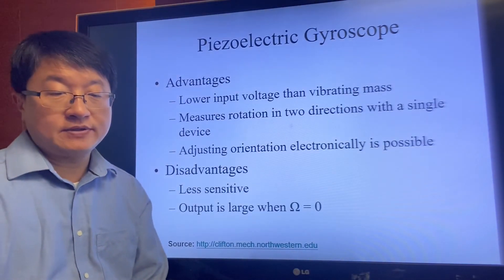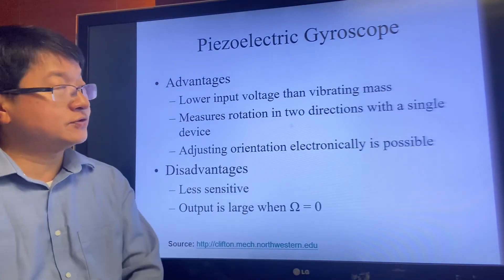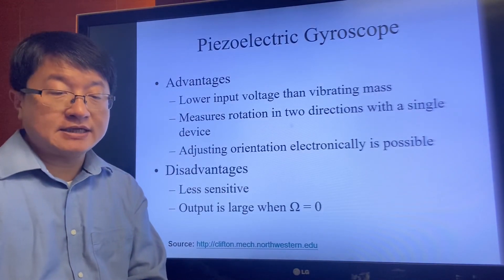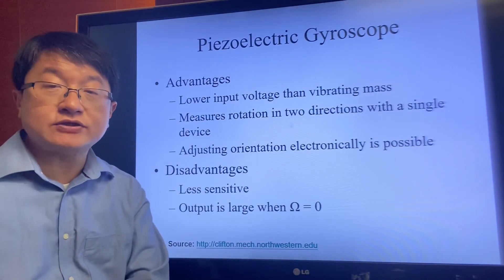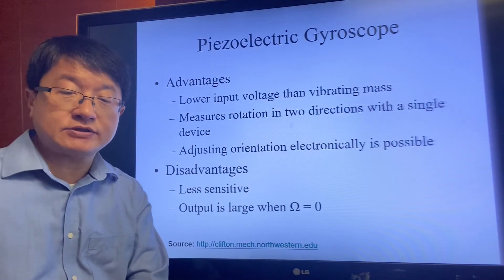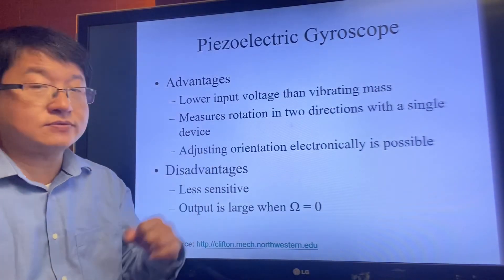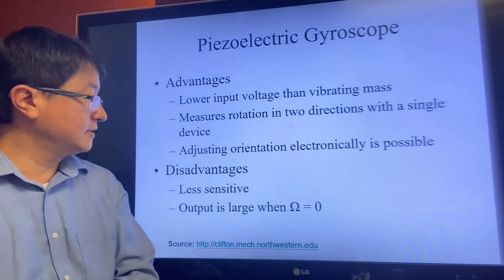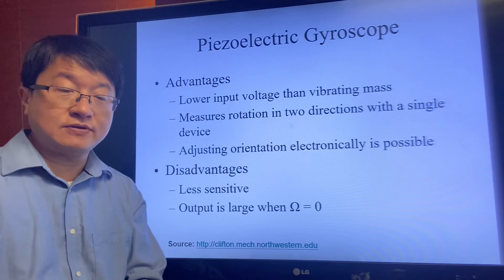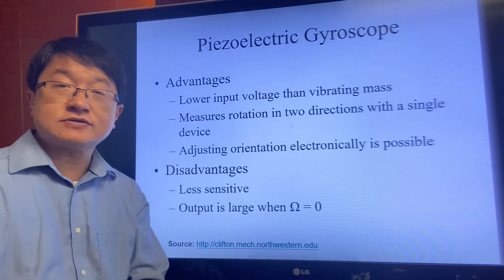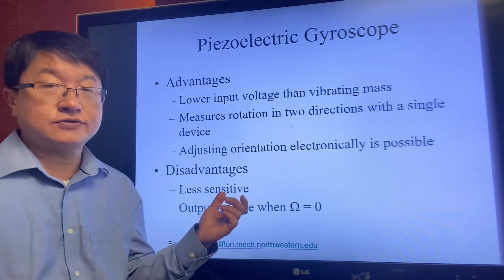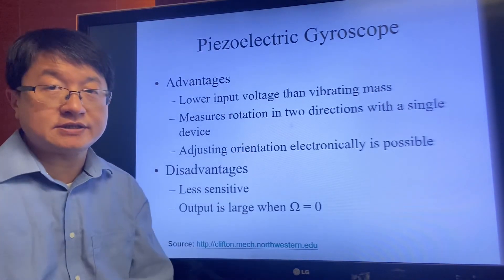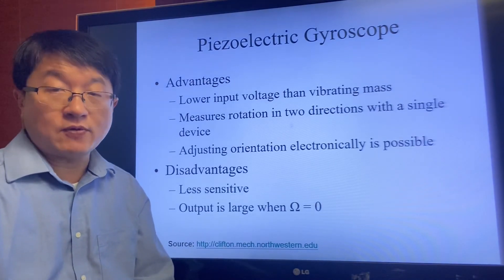There are advantages and disadvantages of using a piezoelectric gyroscope. For example, it can operate at a lower input voltage with a vibrating mass, and can measure rotations in two directions using a single device. However, the sensitivity is not that good, and the output is large when the resistance between the gyroscope elements is small.